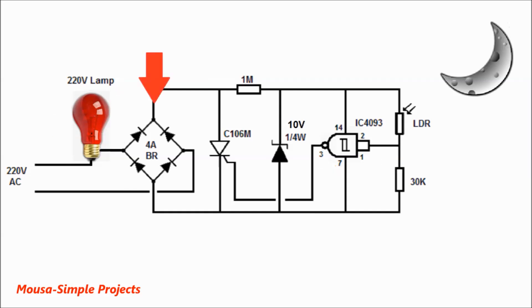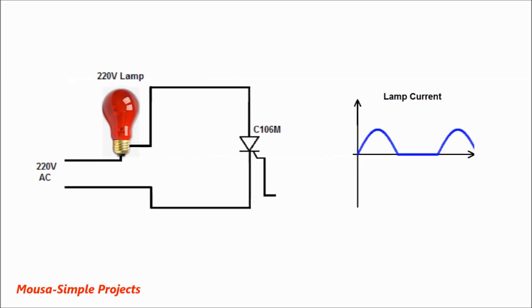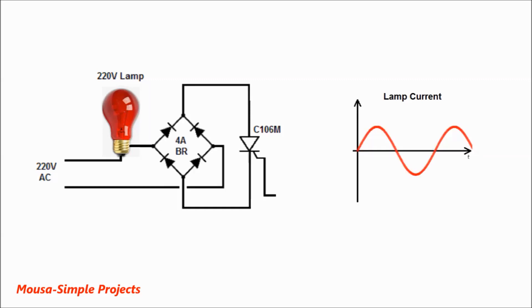This bridge diode has two purposes: first, to convert the AC voltage to DC voltage and run the IC. The second purpose is to run the load in the full cycle, because the SCR can only run the AC load in half cycle. But by using the bridge diode, we can run the AC load in full cycle.